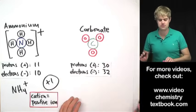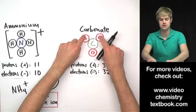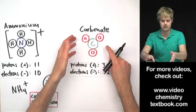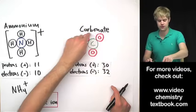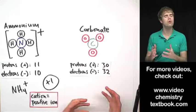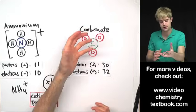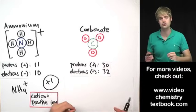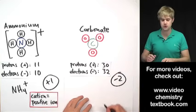Now carbonate, we can do the same thing with it. We can count up the total number of protons that are in the atoms that make it up and we can also count up the total number of electrons that are in this whole group. We get 30 protons total and 32 electrons total. So we have more electrons than protons which means we have more negative charge. It's going to have a net negative charge and since there are two more electrons it's going to have a net charge of minus two.